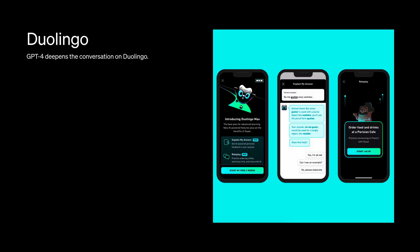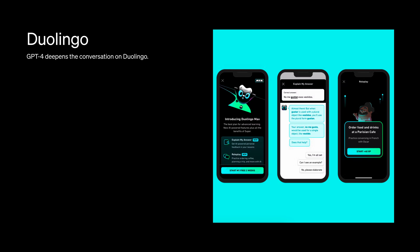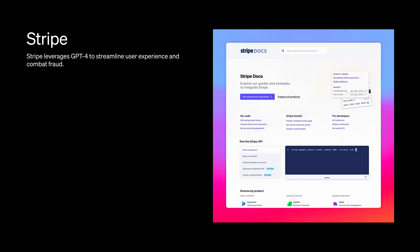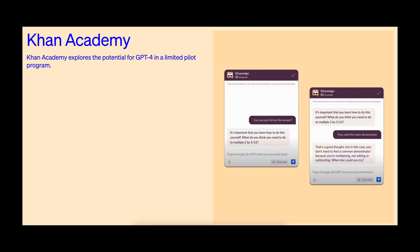GPT-4 will be implemented by so many industries and companies in the world — like Duolingo for making conversations much more advanced and intellectual, Stripe for managing fraud detection more accurately, and the Khan Academy to provide a virtual tutor able to answer most questions even without a physical person present. It has also been implemented by Morgan Stanley and the government of Iceland for other great things.